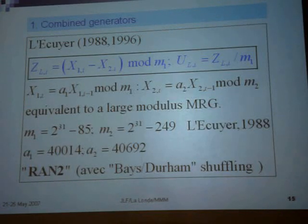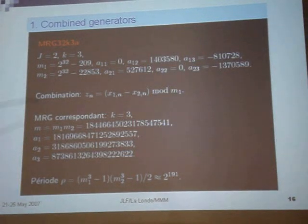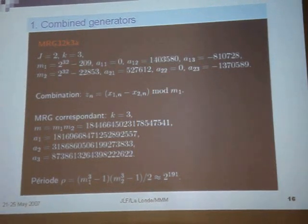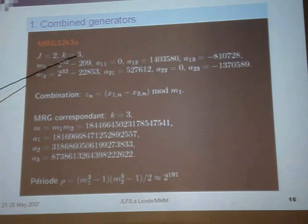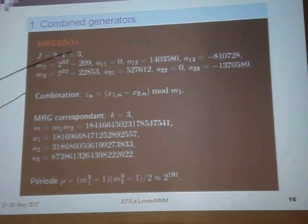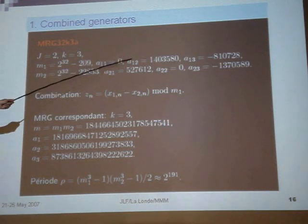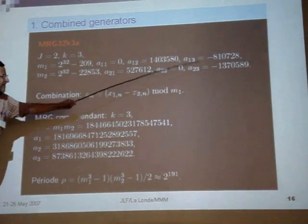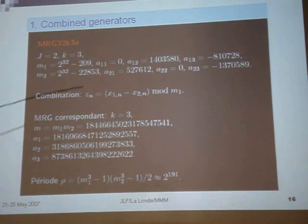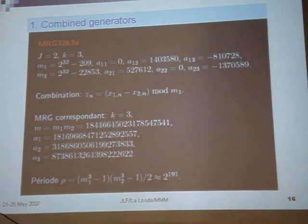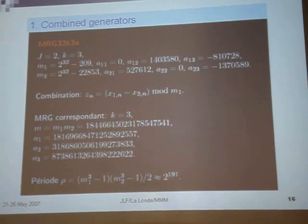But it's not the best choice. The best choice for me is this one with a more complicated structure. MRG32k3k combines two MRGs, each using three elements in the vector space, with moduli m1 and m2. The first generator uses coefficients a11, a12, a13, and the second its own coefficients. You take the difference, divide by m1, and take the remainder. This is equivalent to a large generator with period 2 to the power of 191, that means 10 to the power of 57.